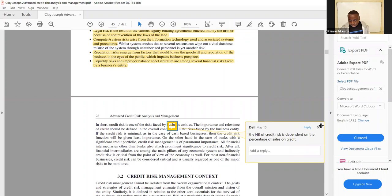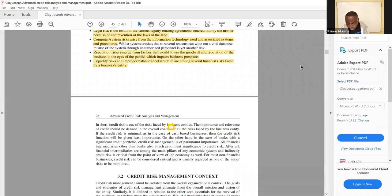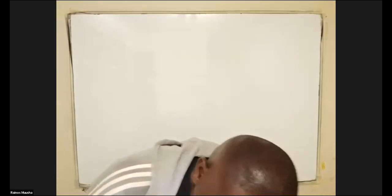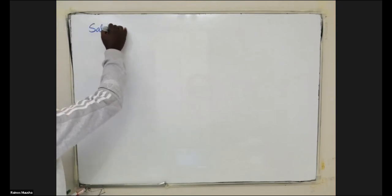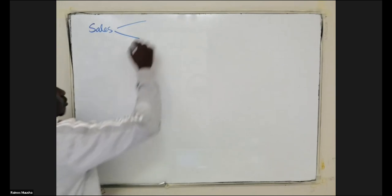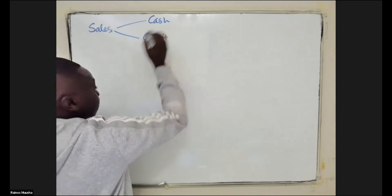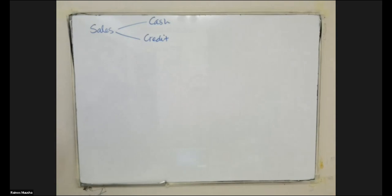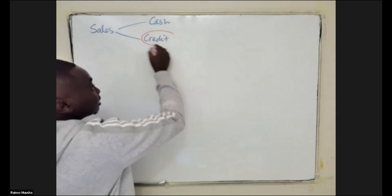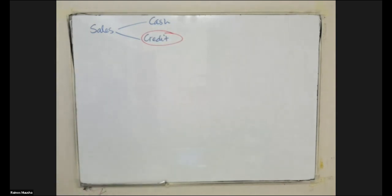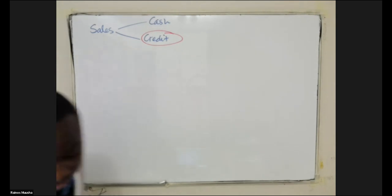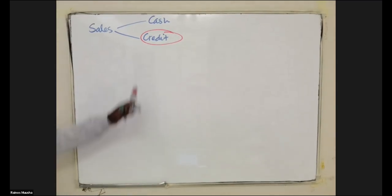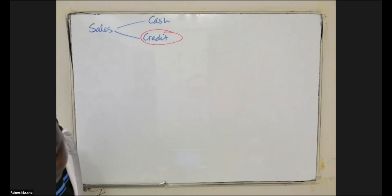For a normal non-financial organization the credit risk is dependent on the percentage of sales on credit. The sales revenue can be split into two — some sales on cash and some on credit. So the credit risk is the risk emanating from the sales revenue coming from credit sales. The higher the percentage of credit sales, the higher the credit risk faced by the organization.